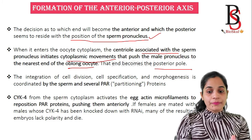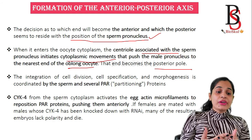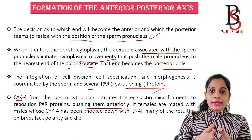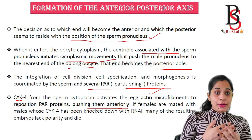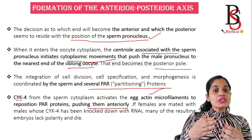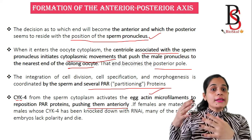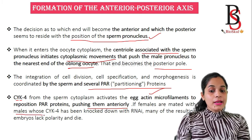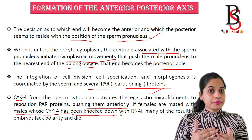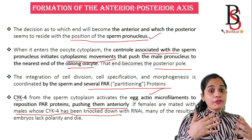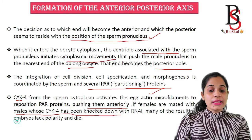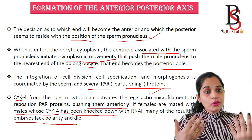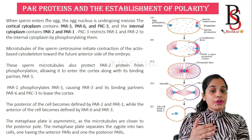That cytoplasmic movement pushes the male pronucleus to the nearest end of the oocyte, and that end becomes the posterior pole. The integration of cell divisions, cell specification, and morphogenesis is coordinated by the sperm and several PAR proteins. CYK4 from the sperm cytoplasm activates the egg microfilament to reposition the PAR proteins and push them anteriorly, so the egg pronucleus is at the anterior end and sperm pronucleus at the posterior end. If females are mated with males whose CYK4 has been knocked down, the embryo lacks anterior-posterior polarity and will die.